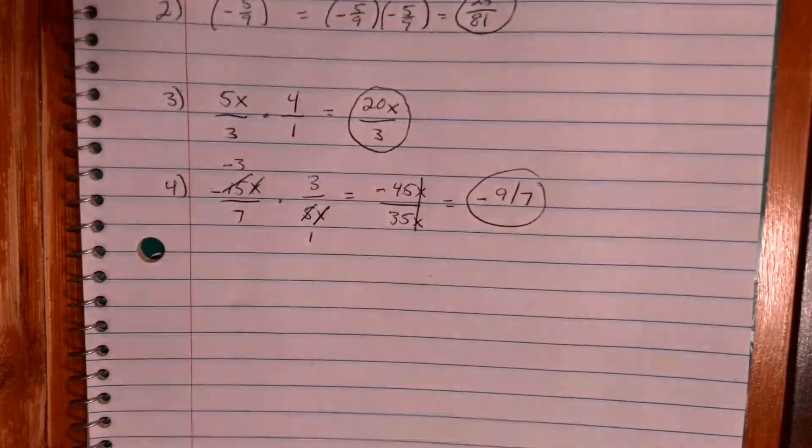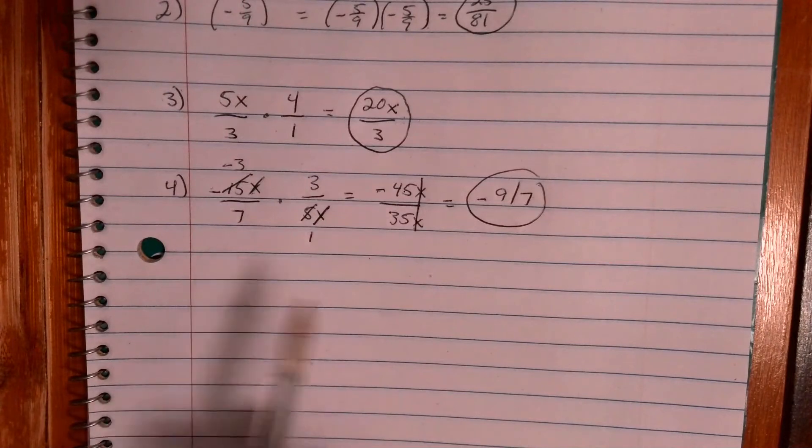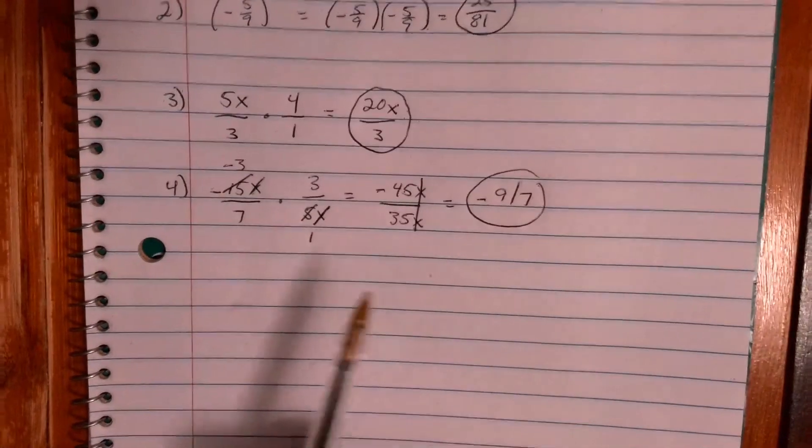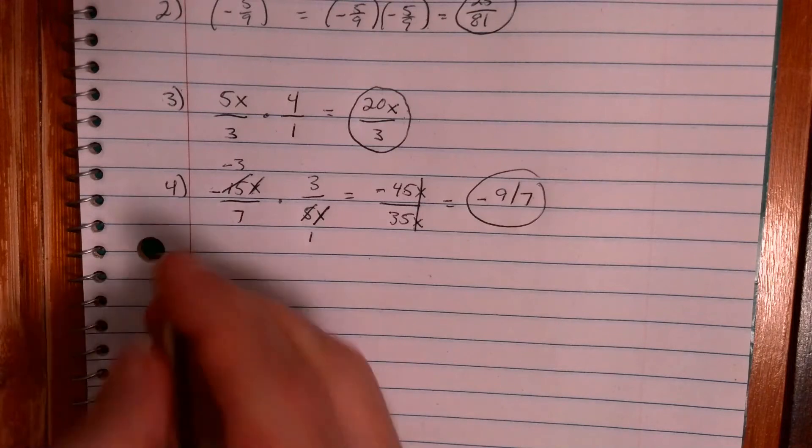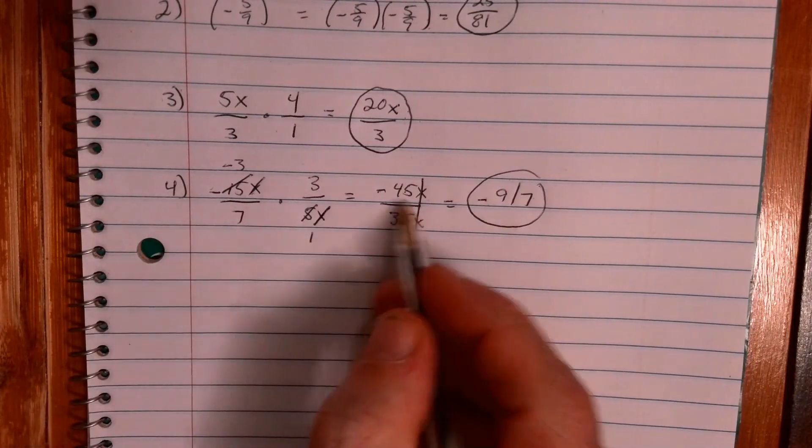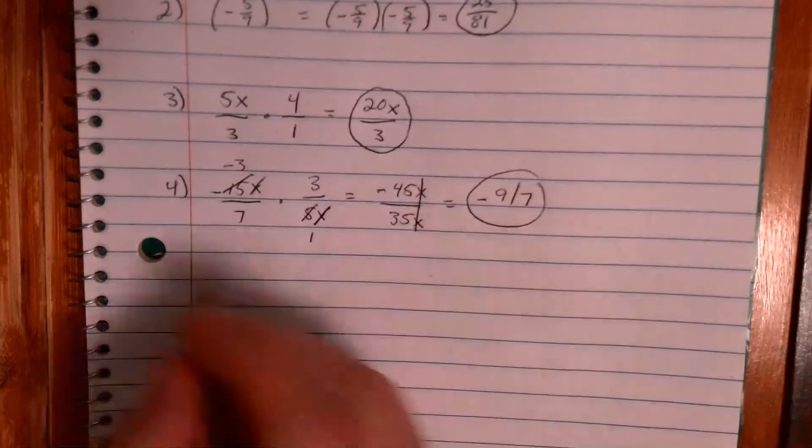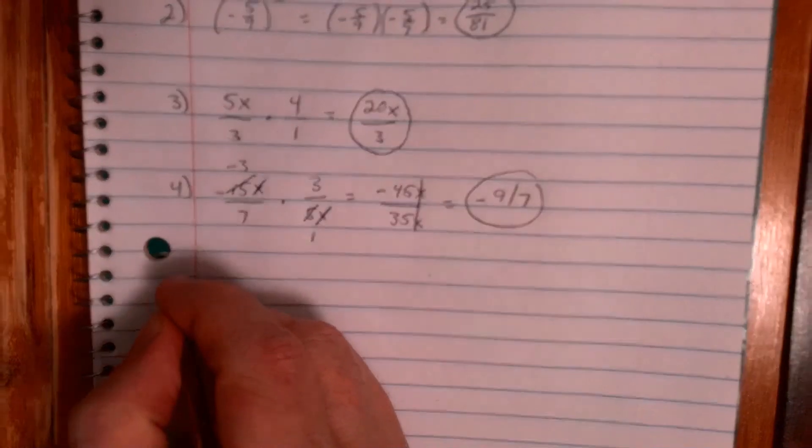And 5 goes into 5 once, so this just becomes 1. And 5 goes into negative 15 negative 3 times. Okay, notice negative 3 times 3 is negative 9, 7 times 1 is 7. So either way, I really don't care what method you use. I love canceling, but hey, if you want to multiply straight across and then kind of use simplifying fractions, which we did, that was practice 4-4 if you remember that one.